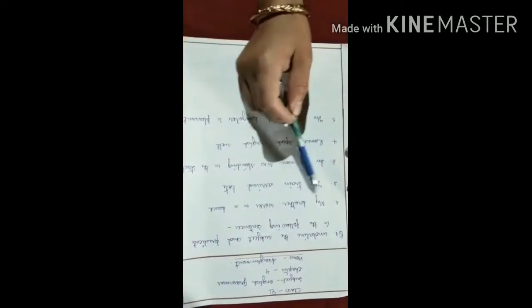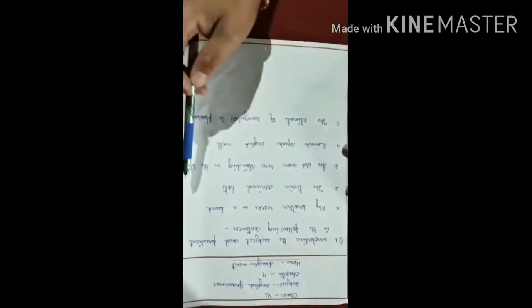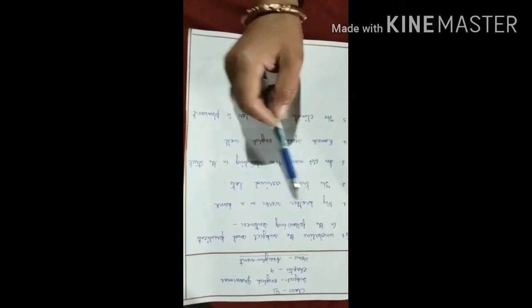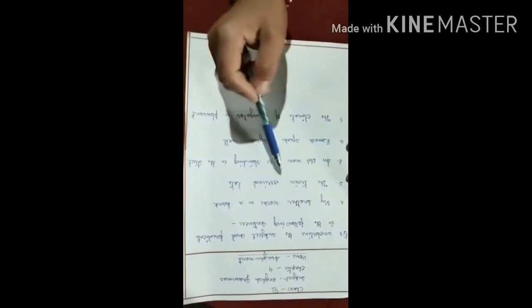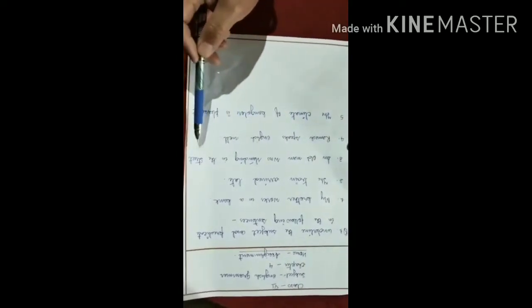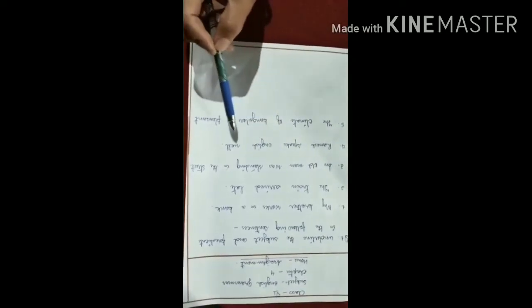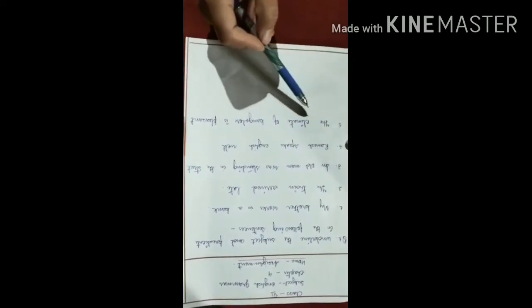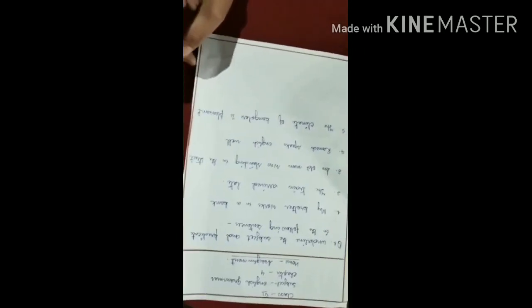Number one: My brother works in a bank. You have to underline the subject and predicate in this sentence. Number two: The train arrived late. Number three: An old man was standing in the street. Number four: Ramesh speaks English well. And number five: The climate of Bangalore is pleasant. Thank you.